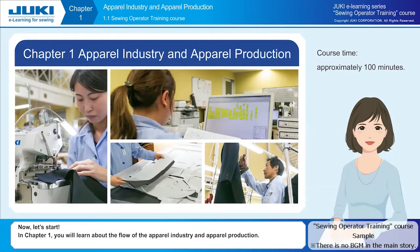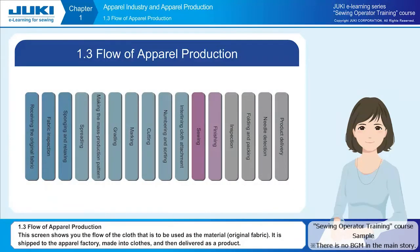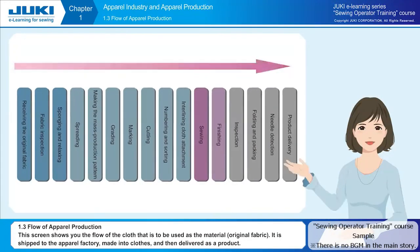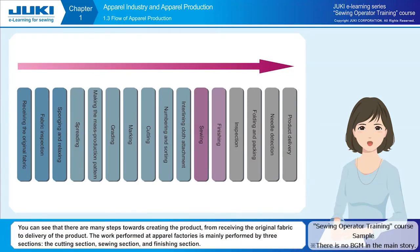In chapter one you will learn about the flow of the apparel industry and apparel production. Chapter one covers the flow of apparel production. This screen shows you the flow of the cloth that is to be used as the material — original fabric. It is shipped to the apparel factory, made into clothes, and then delivered as a product.